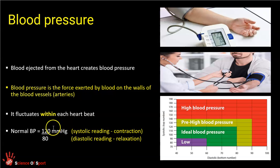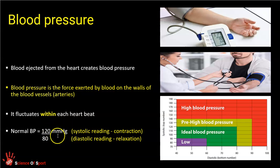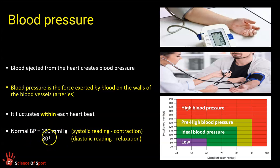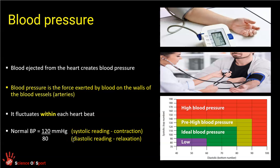You should recognize that unit — millimeters of mercury — because that was to do with pressure; we talked about partial pressure of oxygen and partial pressure of CO2 in millimeters of mercury. We've got two values: a higher value and a lower value. The higher value is the systolic reading and the lower value is the diastolic reading.